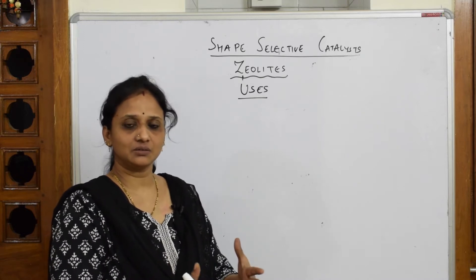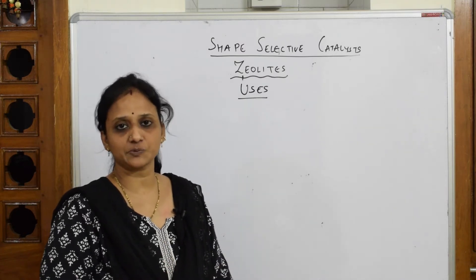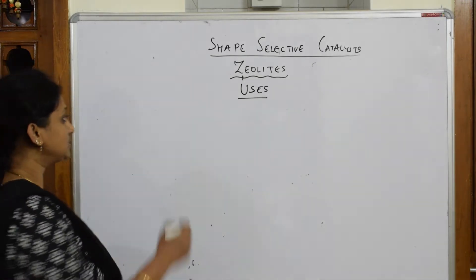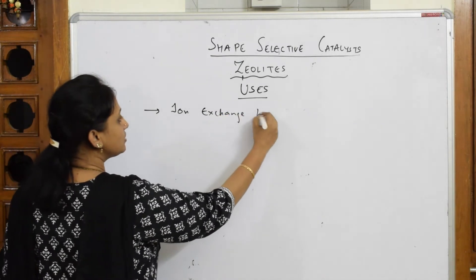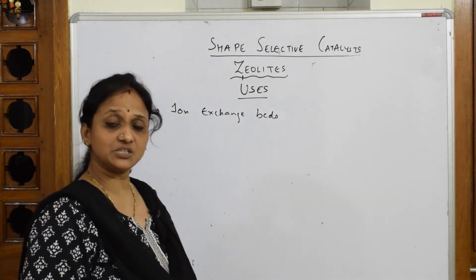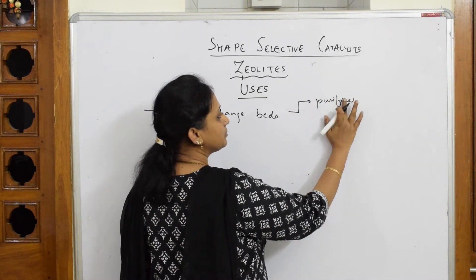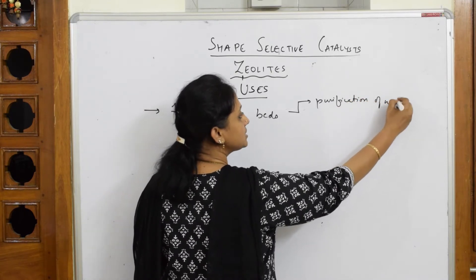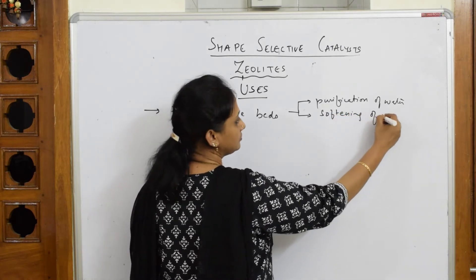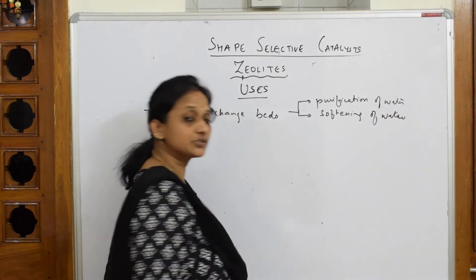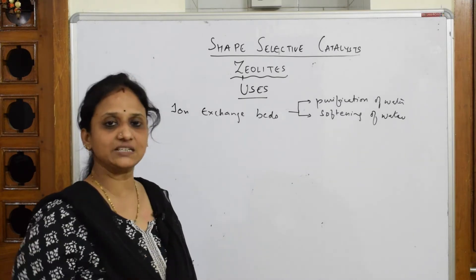Zeolites, because of their porous nature, are used in ion exchange beds. In water plants, they are used for purification of water. After that, they are used for softening of water — even if you have hard water, it exchanges the ions and softens the water, making it easy for consumption.